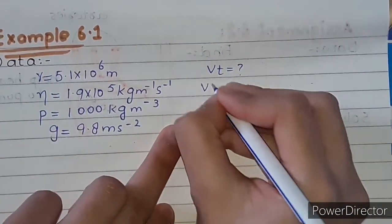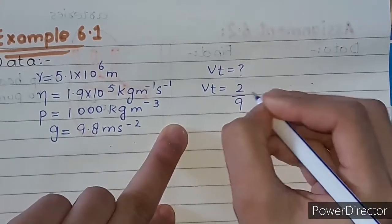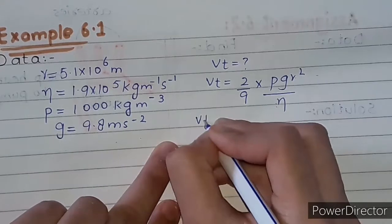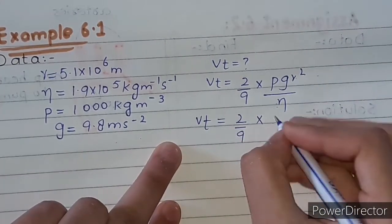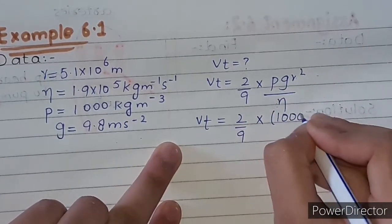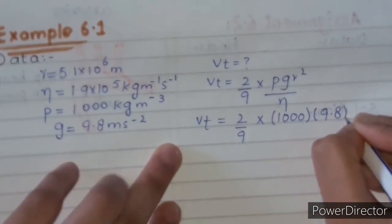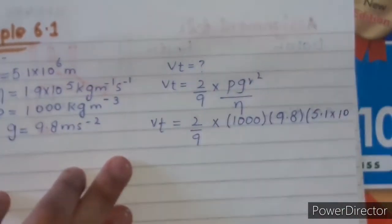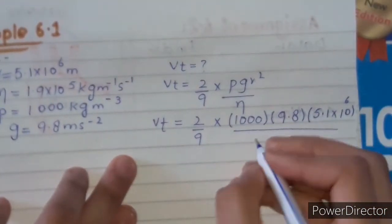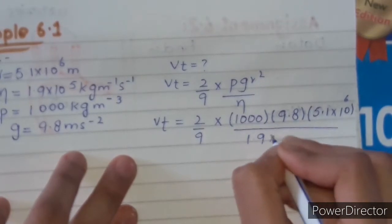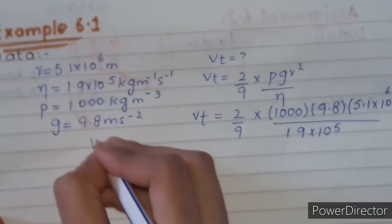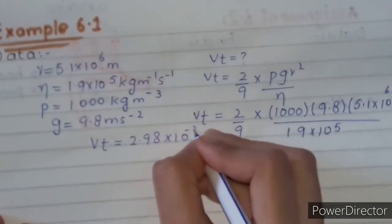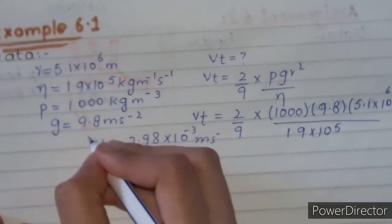We apply the formula: Vt = (2/9) × (ρgR²/η). Substituting η = 1.9×10⁻⁵, the value of Vt comes out to be 2.98×10⁻⁵ meter per second. The unit of velocity is meter per second.